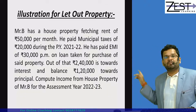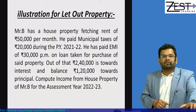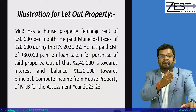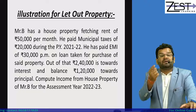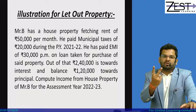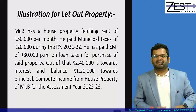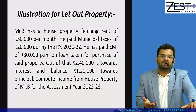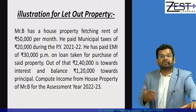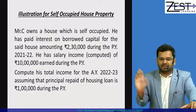Now, in the same case, if the property were self-occupied, then NAV would be directly nil. So standard deduction would also be nil. For interest on borrowed capital, the ceiling limit for a self-occupied property is 2,00,000. So deduction would be only 2,00,000 (even though 2,30,000 was paid). That means income from house property would be negative 2,00,000 — a loss. And a loss in income tax is beneficial because it reduces your taxable income.